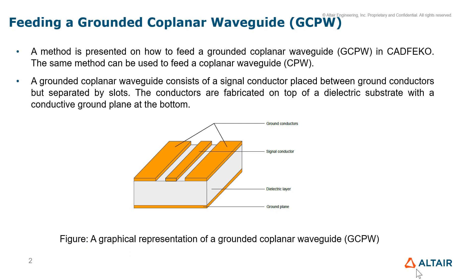A graphical representation of the grounded coplanar waveguide is shown here. You can see a signal conductor in the middle, with ground conductors on either side separated by slots, a dielectric layer beneath, and a ground plane below that.